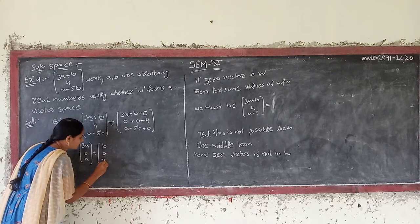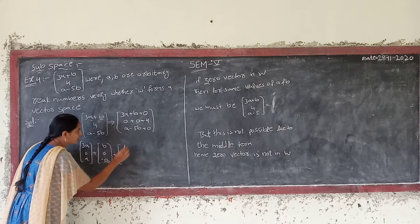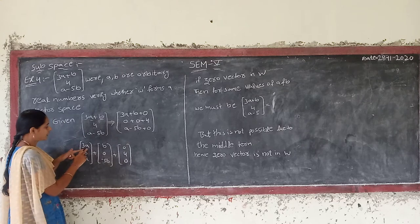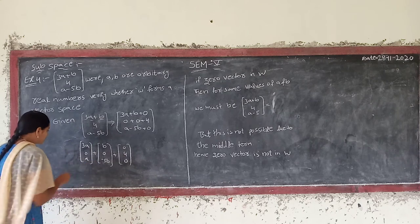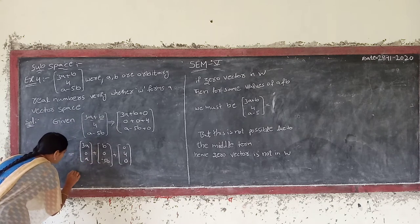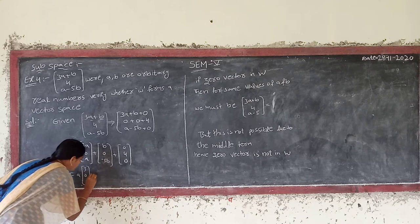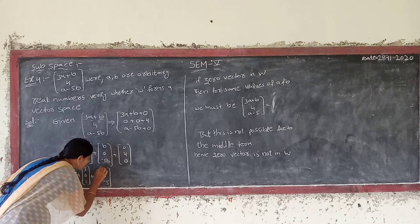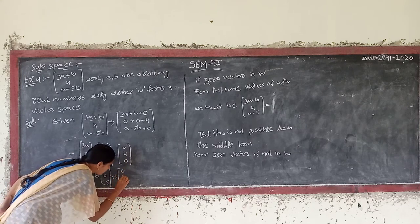0 minus 5b. Next up, constant. Constraint: 0, 4, 0. So can we get a zero vector? We can check. A count is set: (3, 0, 1). The count is set: (1, 0, minus 5). We can verify. Constant: 0, 4, 0.